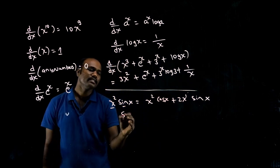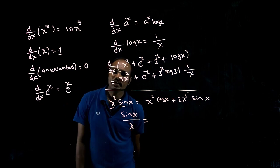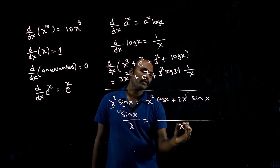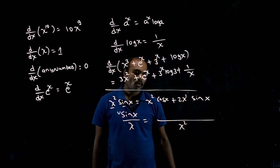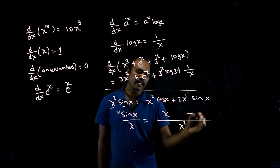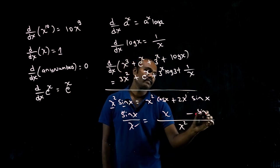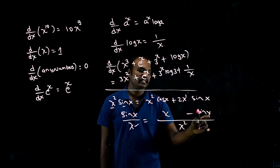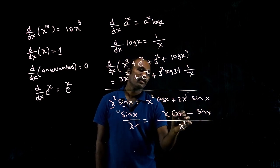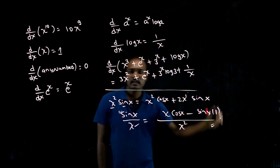Next, division — we also learned the quotient rule. For sin x divided by x: square the denominator. Take the denominator times differentiation of numerator, minus numerator times differentiation of denominator. sin x differentiation is cos x, x differentiation is 1. Simple.